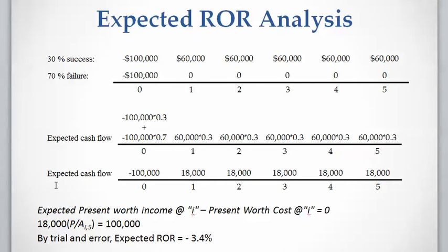The rate of return equation for this expected cash flow has $100,000 of costs and $18,000 of income from year one to year five. Setting present value of cost equal to present value of income and solving this equation using Excel or any other spreadsheet gives us the expected rate of return.